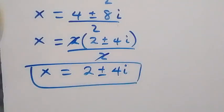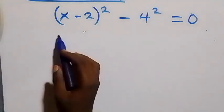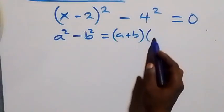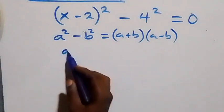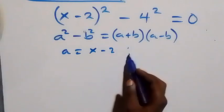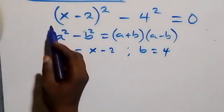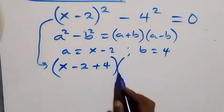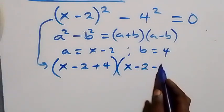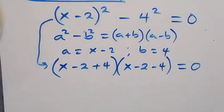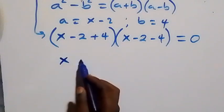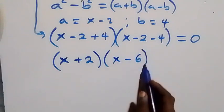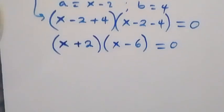Solving the second case, this again follows the difference of two squares: a squared minus b squared equals (a plus b)(a minus b). Here, a is x minus 2 and b is 4. So this becomes (x minus 2 plus 4) times (x minus 2 minus 4) equals to zero, which simplifies to (x plus 2)(x minus 6) equals zero.